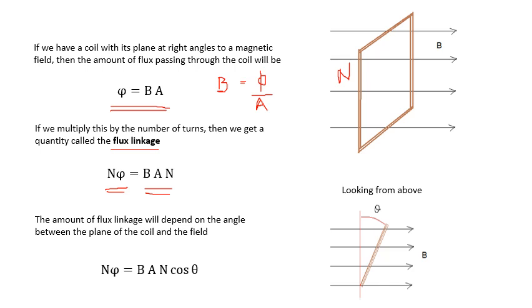Something else which will affect the amount of flux going through the coil is the angle. If you look at the top diagram from above, you'll see that if the coil is perpendicular to the field, there'll be loads of flux going through it; if the coil is parallel to the field, there won't be any flux going through it. So we add a cos theta factor, where theta is the angle between the plane of the coil and the field — if it's zero, cos theta is one. We'll use this equation later when we do generators.